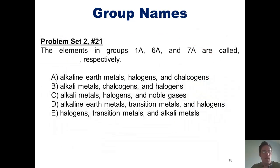This brings us to our next chapter problem. The elements in groups 1A, 6A, and 7A are called what, respectively? Although I didn't tell you the name of the elements in column 6A, I'm betting that you can look it up.